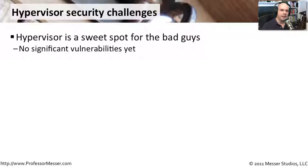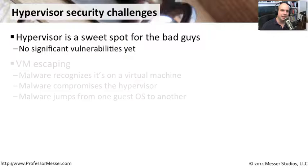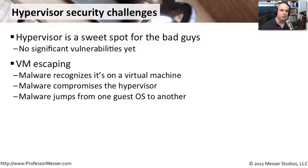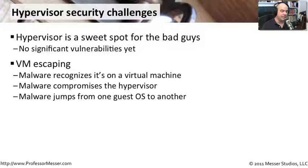A significant security threat is going to be those hypervisors — they are really the overlay for all of the virtual systems, and the bad guys are thinking about that too. They haven't really found any very good vulnerabilities yet, but they're constantly trying. They know that if they can get malware on just one virtual machine, they can have that malware automatically recognize it's part of a virtual machine and somehow communicate back up to the hypervisor, take over access, and gain communications into the hypervisor itself. If they can compromise the hypervisor, they could gain access to any other guest operating system on that computer.